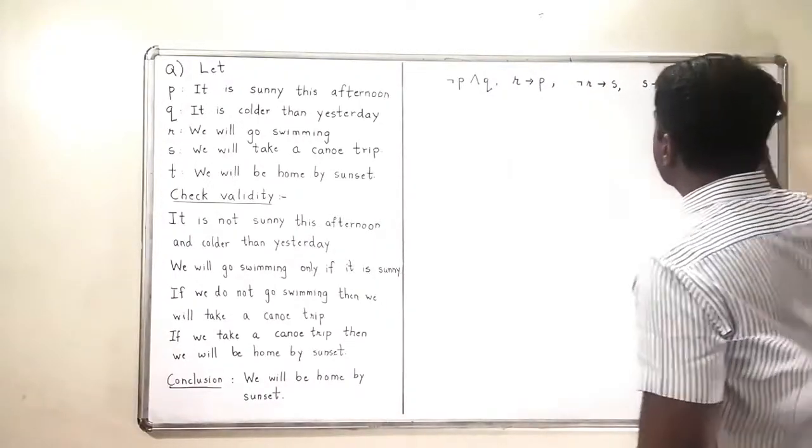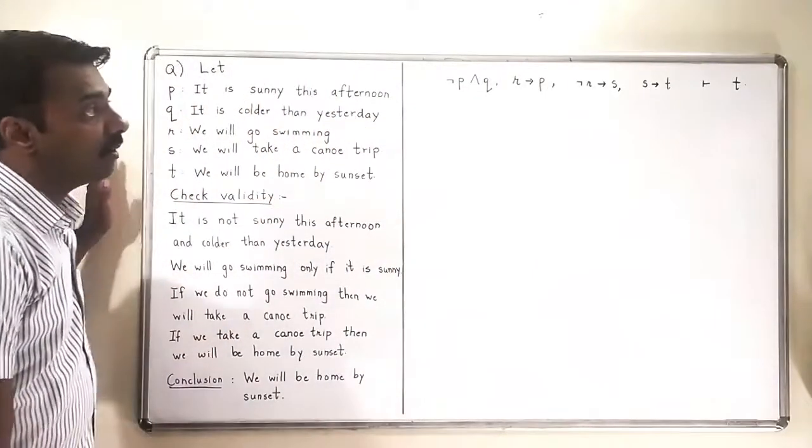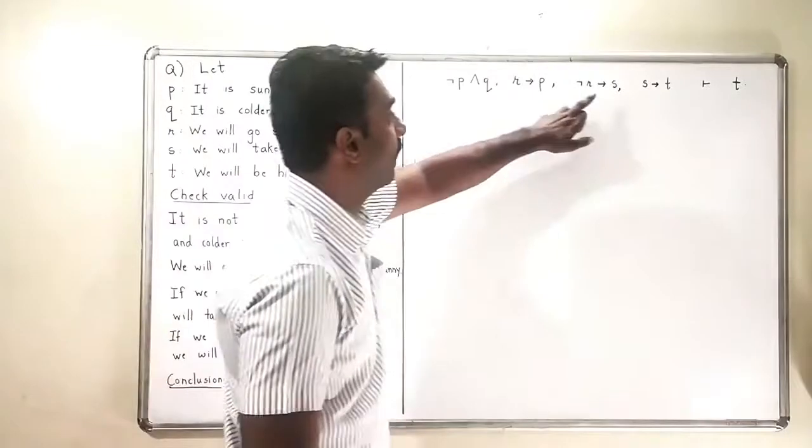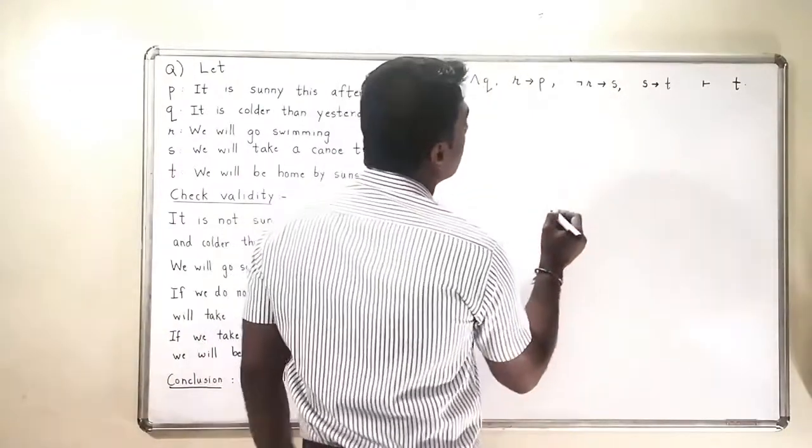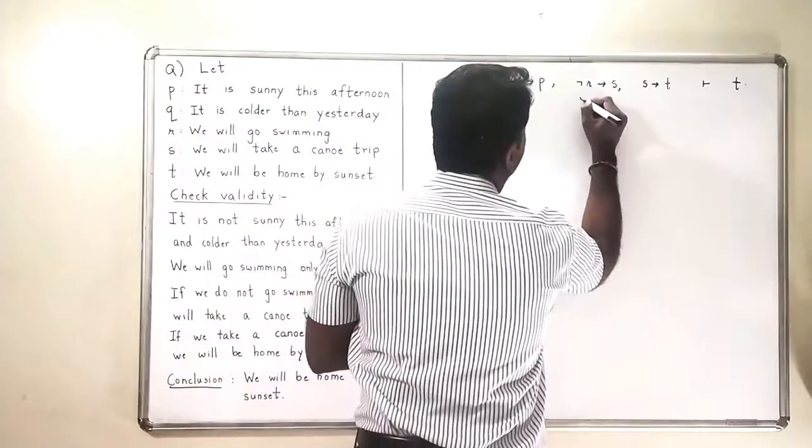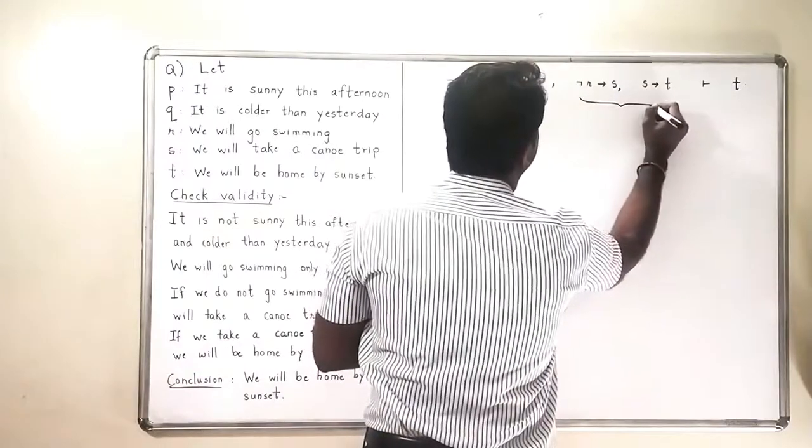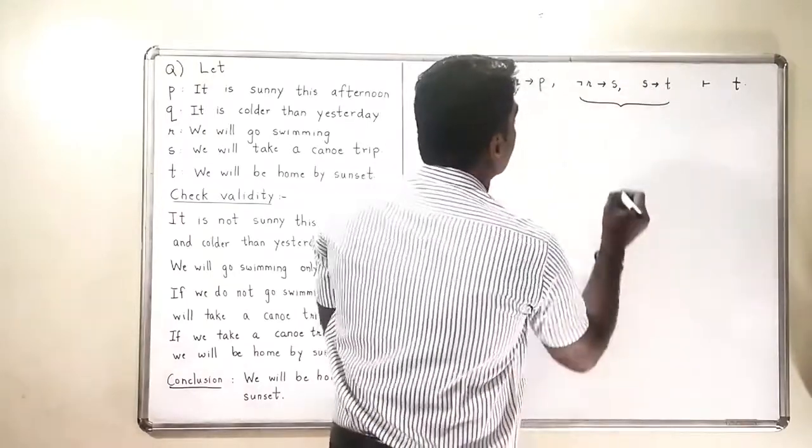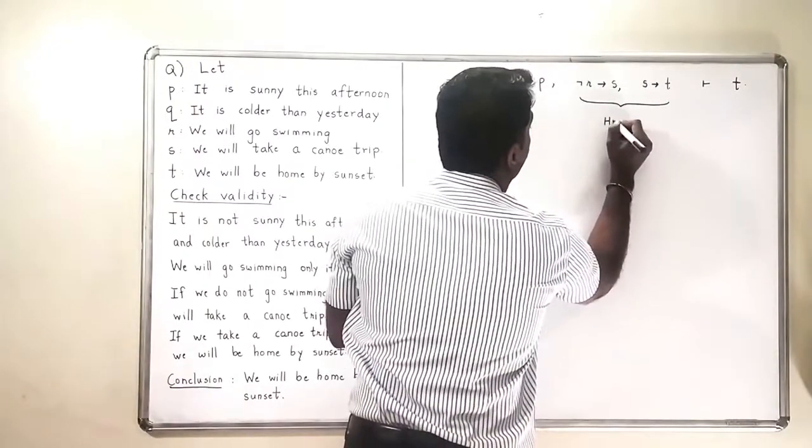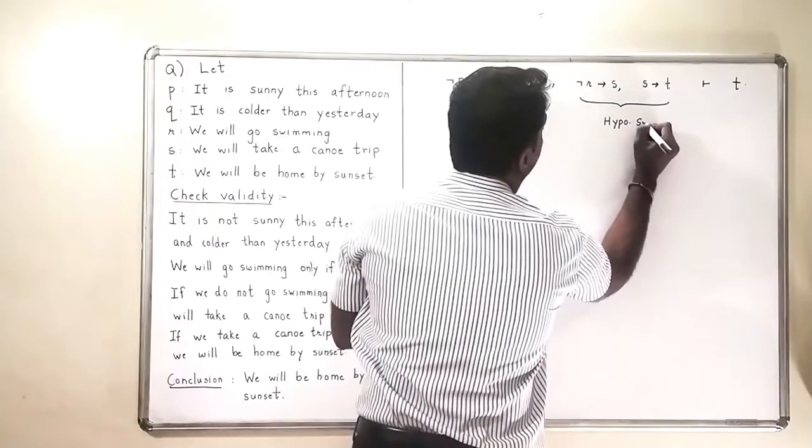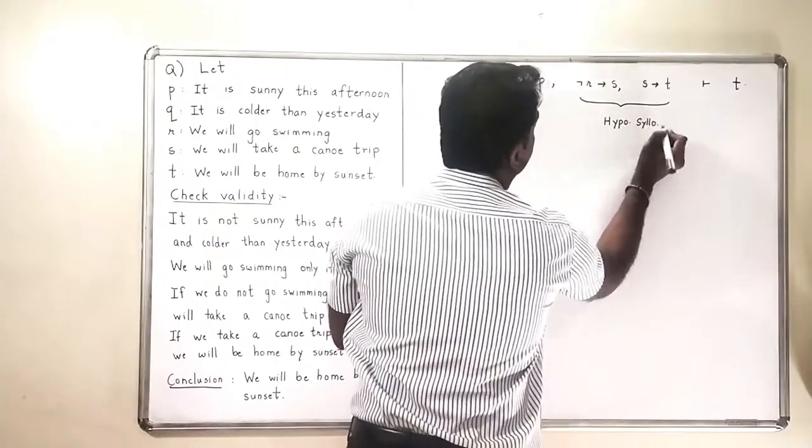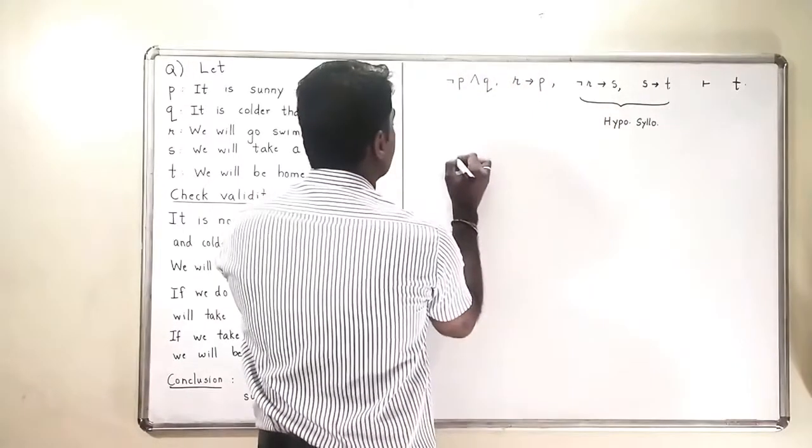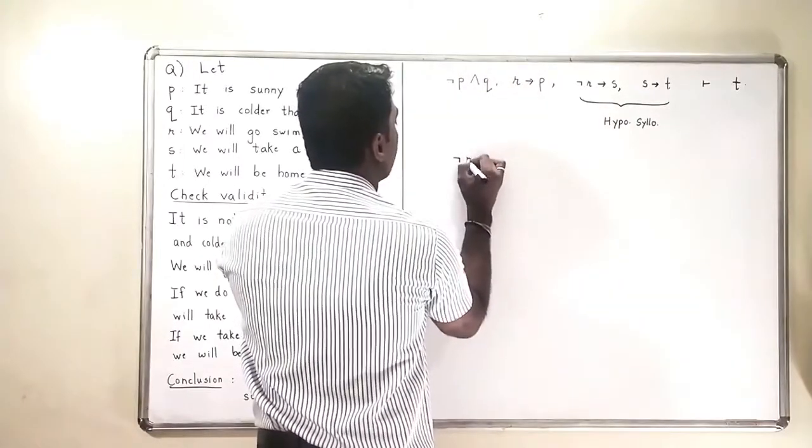So we will check whether this particular argument is valid or not. Let us start simplifying these things. Now it is clear that when I look at the third and fourth statements, negation R implies S and S implies T, I can use hypothetical syllogism which will give negation R implies T.